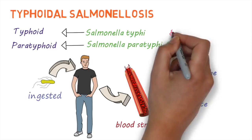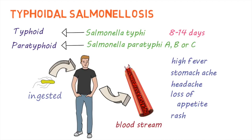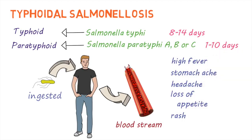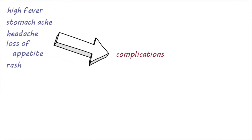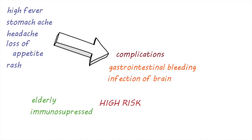These symptoms usually occur between 8 to 14 days after being exposed to the bacteria in typhoid fever, and 1 to 10 days after being exposed for paratyphoid fever. In some cases, it could lead to serious complications like bleeding from the intestinal tract or infection of the brain. The elderly and those with weakened immune systems are at a higher risk of complications.